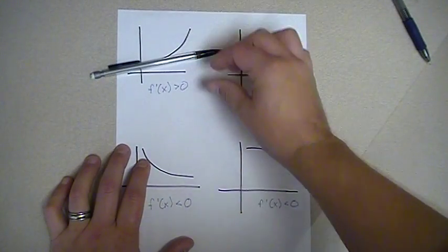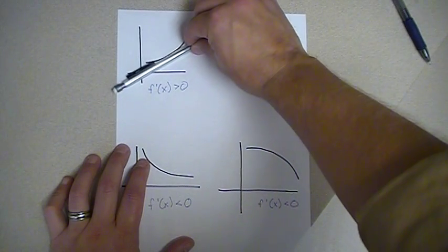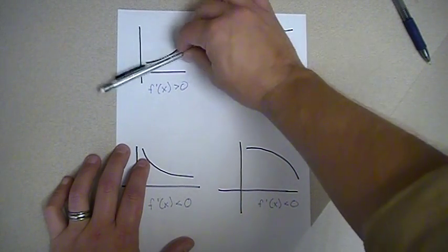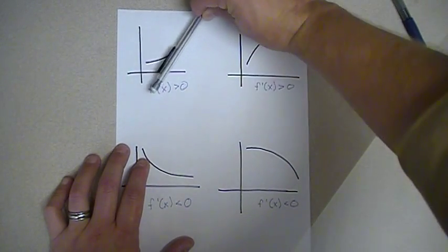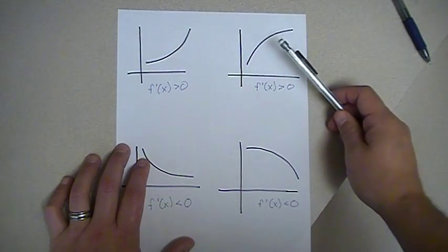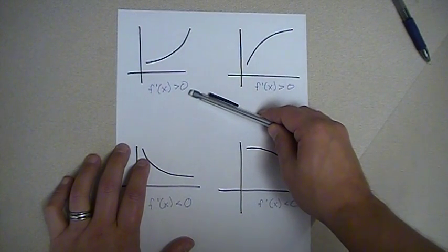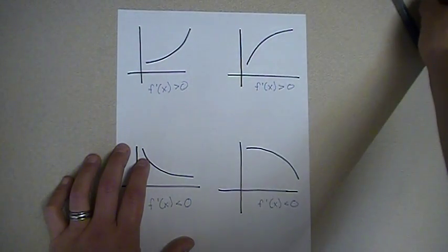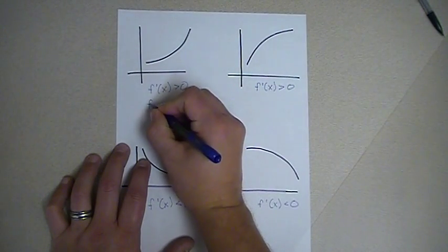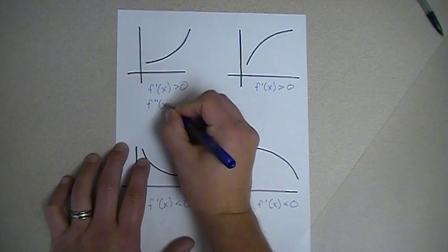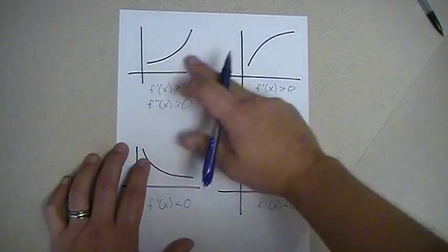Look at the rate of change of the slope of the tangent line to this graph. I have a small positive slope, bigger positive slope, bigger positive slope, bigger positive slope. My slopes are increasing on this graph. Because my slopes are increasing, the rate of change of the first derivative is positive — or the second derivative is positive.